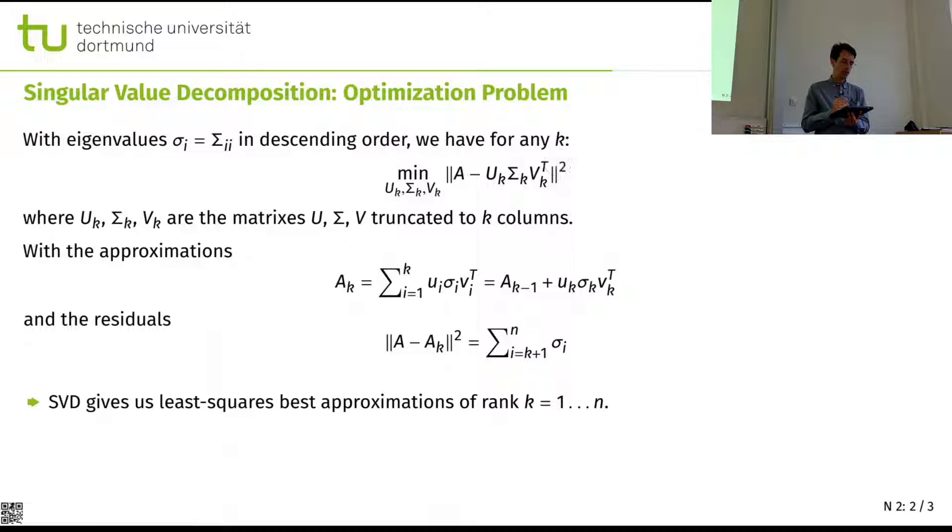And that means we can incrementally refine our approximation by adding another column. So our approximation of rank k is the sum of all the rows that we have. So it is our previous approximation plus one row, one eigenvalue, one column. That is the new that we get if we increase k.